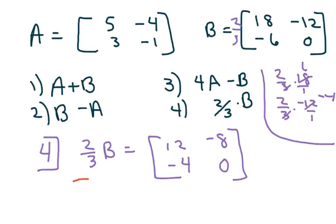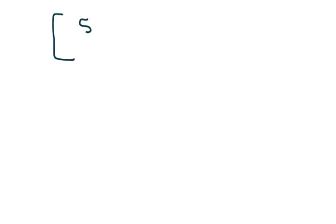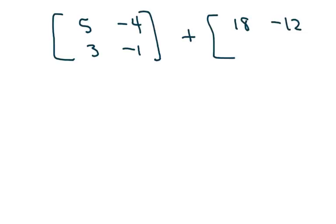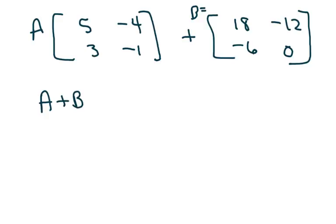For part four, to add matrices I'm going to squeeze it in here. Basically when we add these we're going to add: 5, negative 4, 3, negative 1 plus 18, negative 12, negative 6, and 0 — just like we did on the first page. So A plus B equals 23, negative 16, negative 3, negative 1.